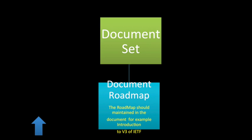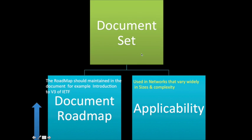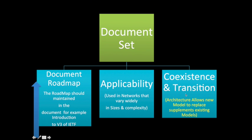SNMP version 3 starts with the definition of a document set, under which it defines a roadmap. This roadmap should be maintained in the document — for example, the introduction of SNMPv3 from IETF. The first element in the document set is the document set itself. The second element is applicability, which defines networks that vary widely in size and complexity. Another element is coexistence and transitions.